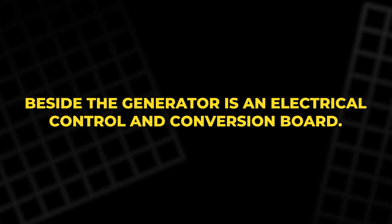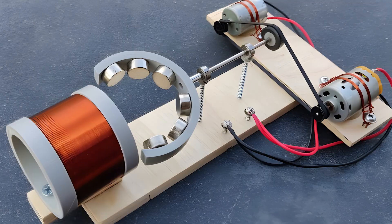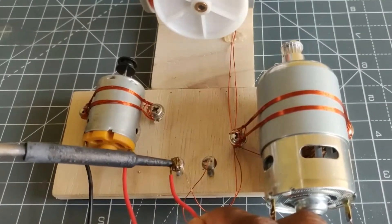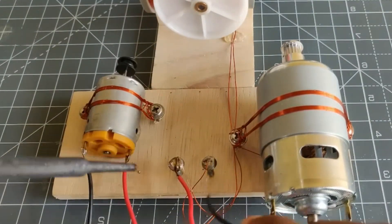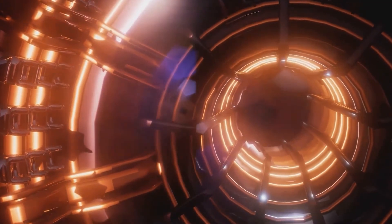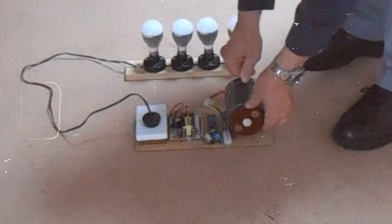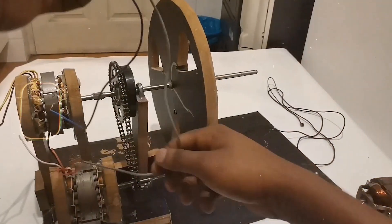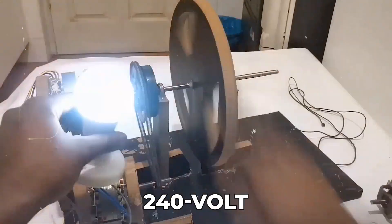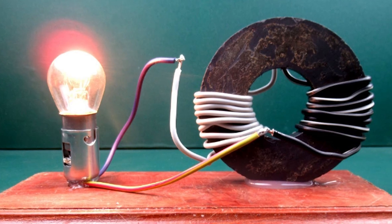Beside the generator is an electrical control and conversion board. Viewed from different angles, it looks fairly ordinary, with wires, connectors, and standard electronic modules. Hidden within it are several important blocks. One module monitors the raw output from the generator and decides when there is enough power to do useful work. Once that threshold is reached, it switches on other modules that take the rough internal power and convert it to a stable 240-volt AC supply that can be used by regular household devices.